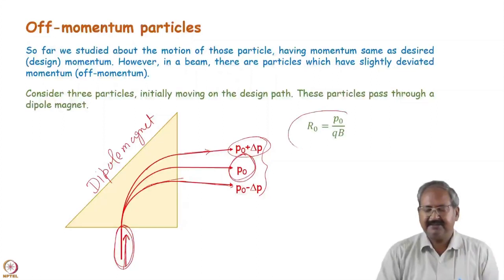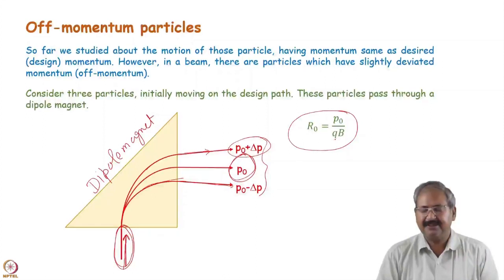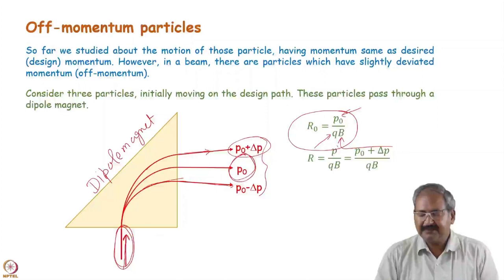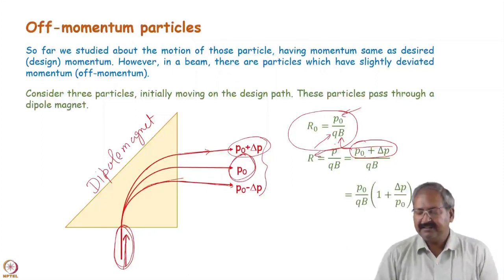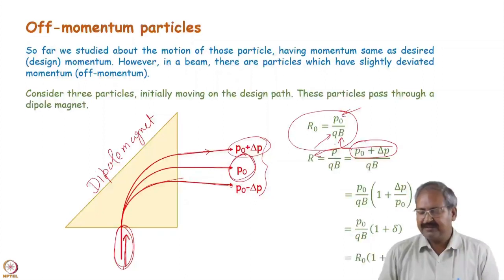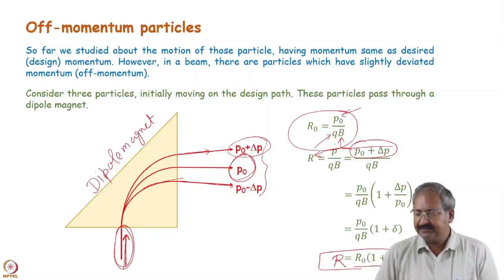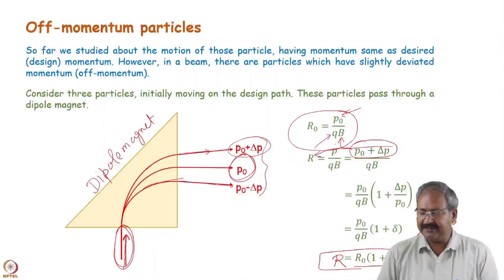We have the formulation: r₀ = p₀ / (qB) — the radius of curvature of a particle having momentum p₀, charge q, passing through magnetic field B. Now if instead of p₀ we have p₀ + δp, the new radius of curvature r = r₀(1 + δ), where δ = δp/p is the fractional deviation in momentum, also known as momentum offset. So for a particle with fractional momentum deviation δ, the radius of curvature will be r₀(1 + δ).